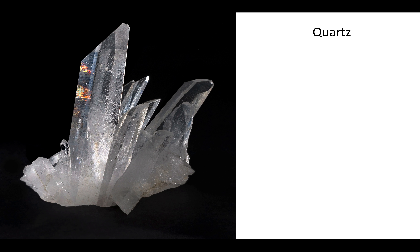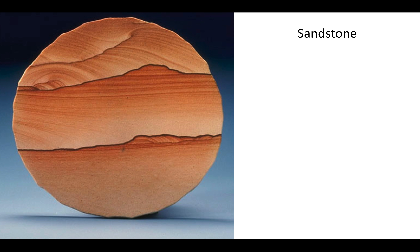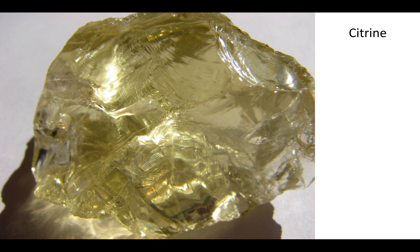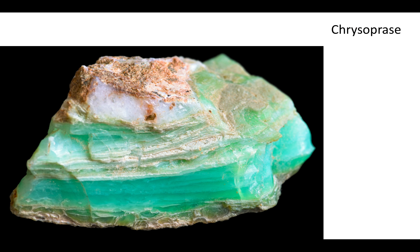Depending on the other molecules that might be sprinkled in, the sand can start crystallizing into different minerals. These are called silicates. Depending on the different ingredients that are sprinkled in, they're different colors — they can be very beautiful.